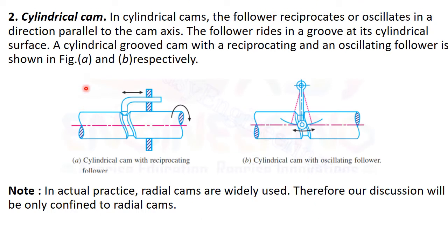The second type is the cylindrical cam. In cylindrical cams, the follower reciprocates or oscillates in a direction parallel to the axis of the cam. The follower rides in a groove on its cylindrical surface. Cylindrical cams with a reciprocating or oscillating follower are shown in figures A and B respectively.